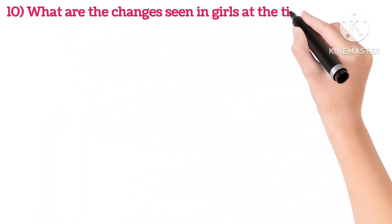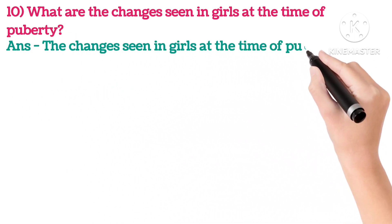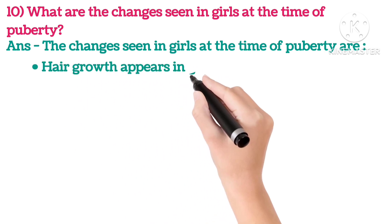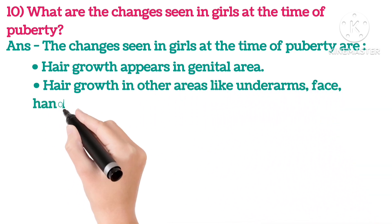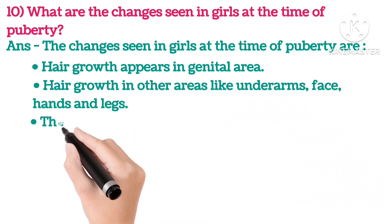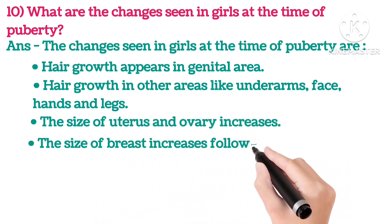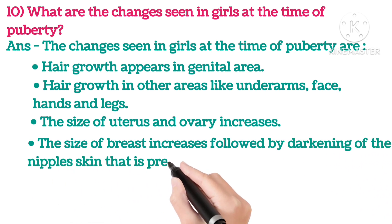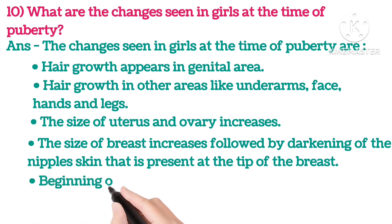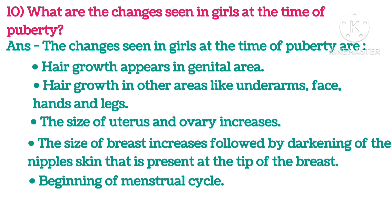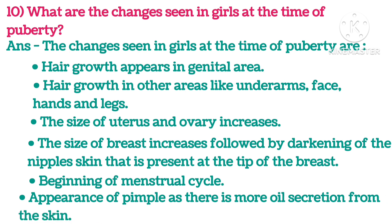Tenth: What are the changes seen in girls at the time of puberty? The changes are: hair growth appears in the genital area and other areas like underarms, face, hands, and legs. Size of the uterus and ovary increases. The size of the breast increases, followed by darkening of the nipple skin at the tip of the breast. Beginning of menstrual cycle. Appearance of pimples as there is more oil secretion from the skin.